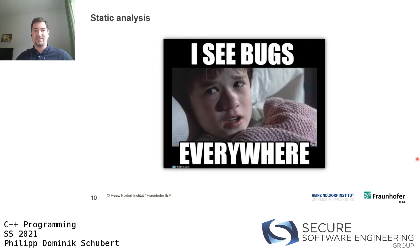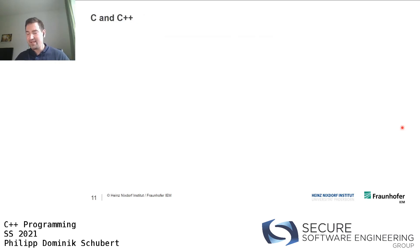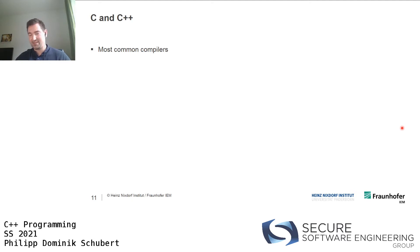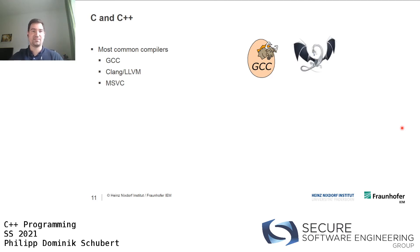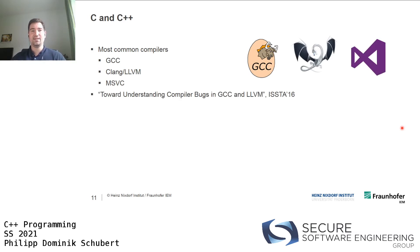I personally use static analysis to find bugs and security vulnerabilities. Now let's present some examples of bugs found in C and C++ projects. Most common compilers for C and C++ are GCC, Clang/LLVM, and MSVC. A 2016 paper called 'Toward Understanding Compiler Bugs in GCC and LLVM' found that C++ was the most buggy component in both compilers, accounting for 20% of total bugs, and compiler bugs can be triggered with programs of fewer than 45 lines of code.